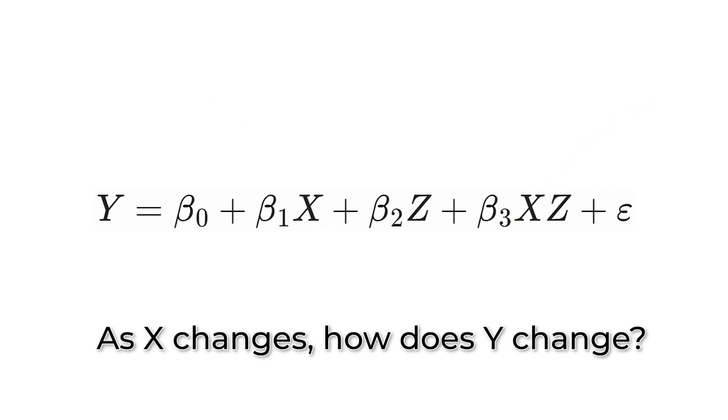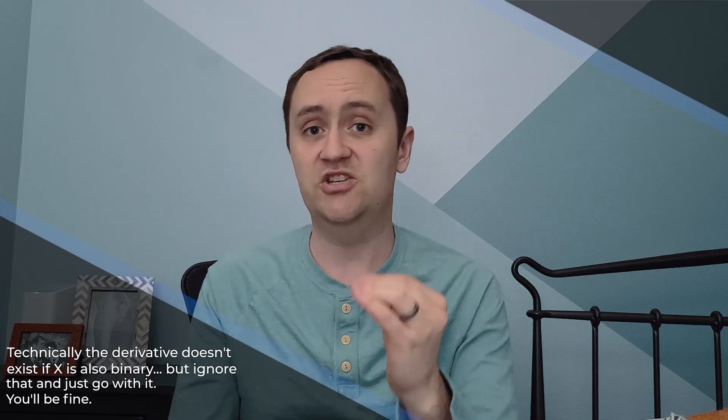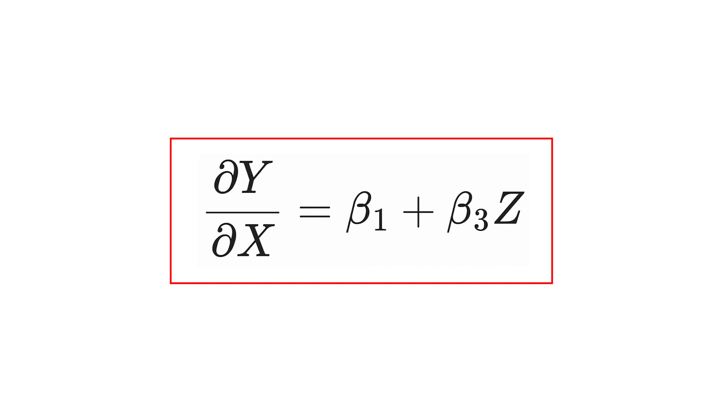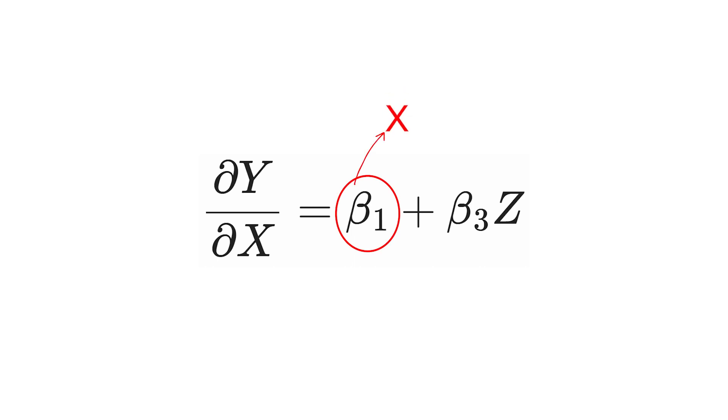The effect of x is how y changes as x changes, and that's reflected in two parts of the model. So the first thing I always recommend — especially starting out — is to write out the equation and take the derivative of y with respect to x. The derivative, the effect of x on y, is beta 1 (the coefficient on x) plus beta 3 times z (the coefficient on the interaction term). To find the effect of x, we have to plug in a value of z — it is conditional on z. This is why a binary z makes interpretation easier; all the math still works for continuous z, it just takes an extra mental step.